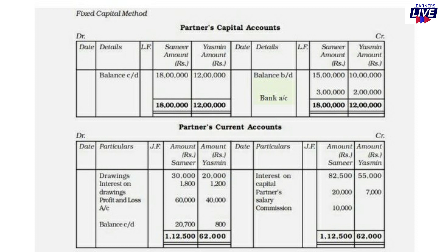Salary is credited to the partners' current accounts: Samir Rs. 20,000, Yasmin Rs. 7,000. Commission is also credited — Samir Rs. 10,000. Commission goes on the credit side: Rs. 10,000.